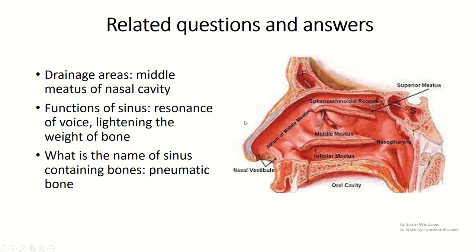The frontal sinus drains into the middle meatus. Its functions include resonance of the voice and lightening the weight of the bones. It is present within the pneumatic bone.